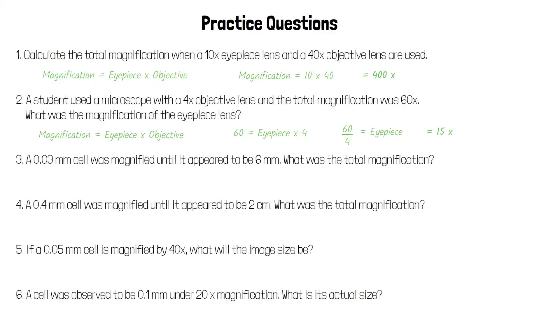For the next question we use the other magnification equation: magnification equals image over actual. We know that the image size is 6 mm and the actual size is 0.03 mm. 6 over 0.03 is 200 times.